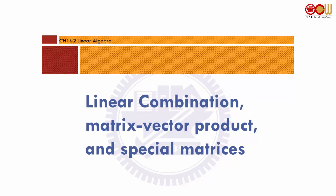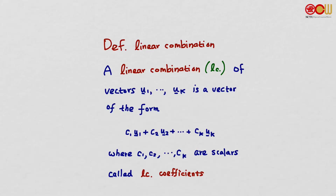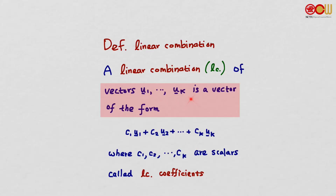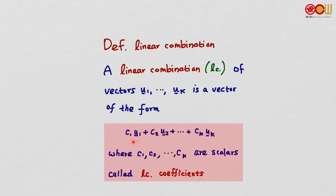Section 1.2: Linear Combination, Matrix Vector Product, and Special Matrices. First, the definition of linear combination. Linear combination seems to be a concept that is abstract at first — I get people asking me about it two months into the class. A linear combination, abbreviated LC, of the vectors u1 to uk is a vector of the form c1·u1 + c2·u2 + ... + ck·uk, where c1 to ck are scalars — real numbers — called linear combination coefficients.